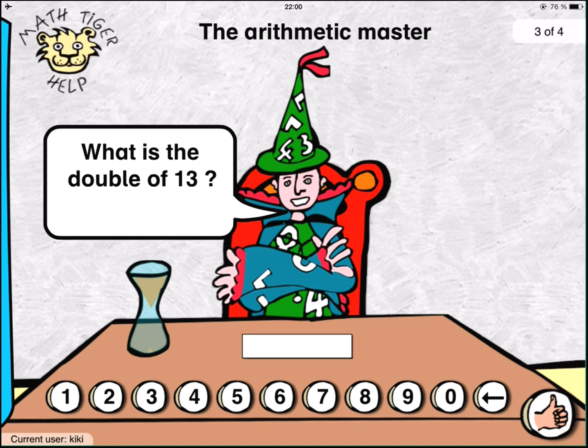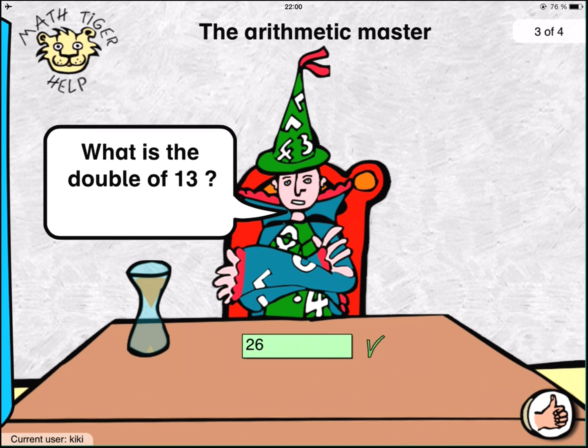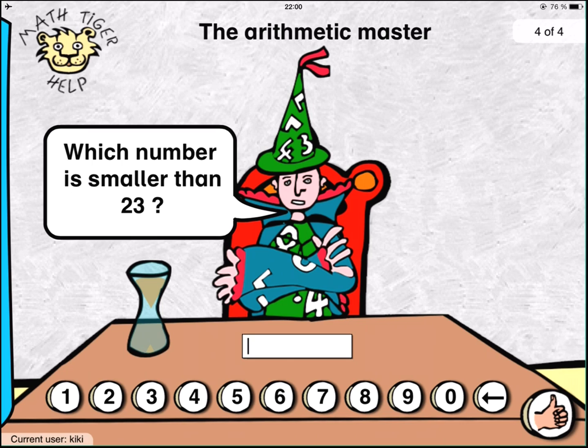What is the double of thirteen? Which number is smaller than twenty-three?